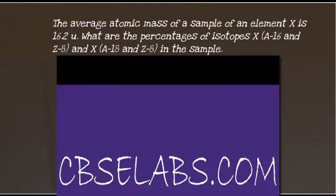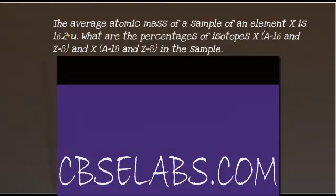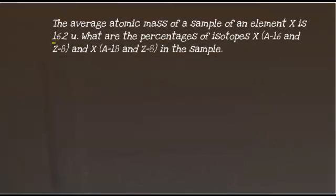The question we have is: we are given the average atomic mass of a sample of an element x as 16.2u, and we have to find out the percentage of isotopes x-18 and x-16 in the sample.